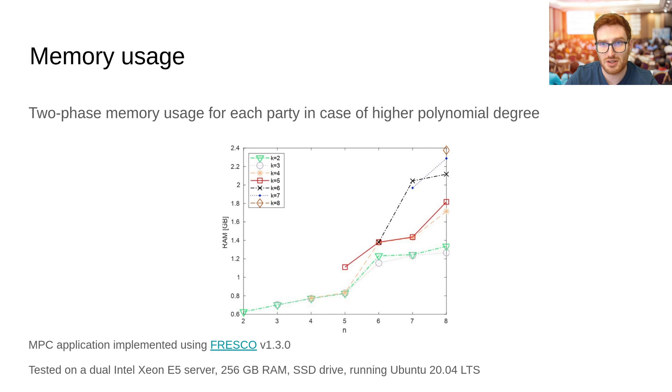Here we illustrate how the memory consumption for each participant of the two-phase share generation changes according to an increase in the degree of the polynomial. As you can see, we go from roughly 0.6 GB of RAM to approximately 2.4. We point out that the MPC application was implemented using the Fresco efficient and secure computation framework, and all the tests were performed on a dual Xeon E5 server, running Ubuntu 2004. Please refer to the paper for further details.